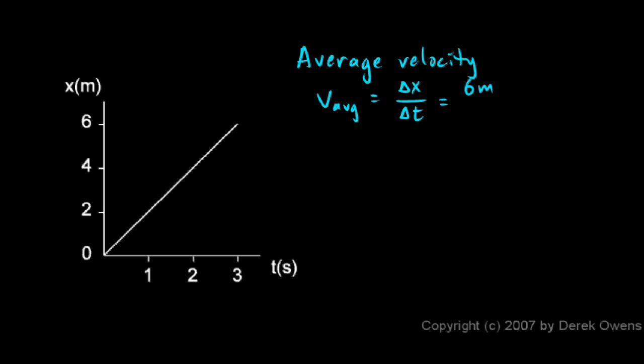So delta x, my displacement there, or how far it went, 6 meters and delta t was 3 seconds. And you can see that works out to 2 meters per second. That's the average velocity.